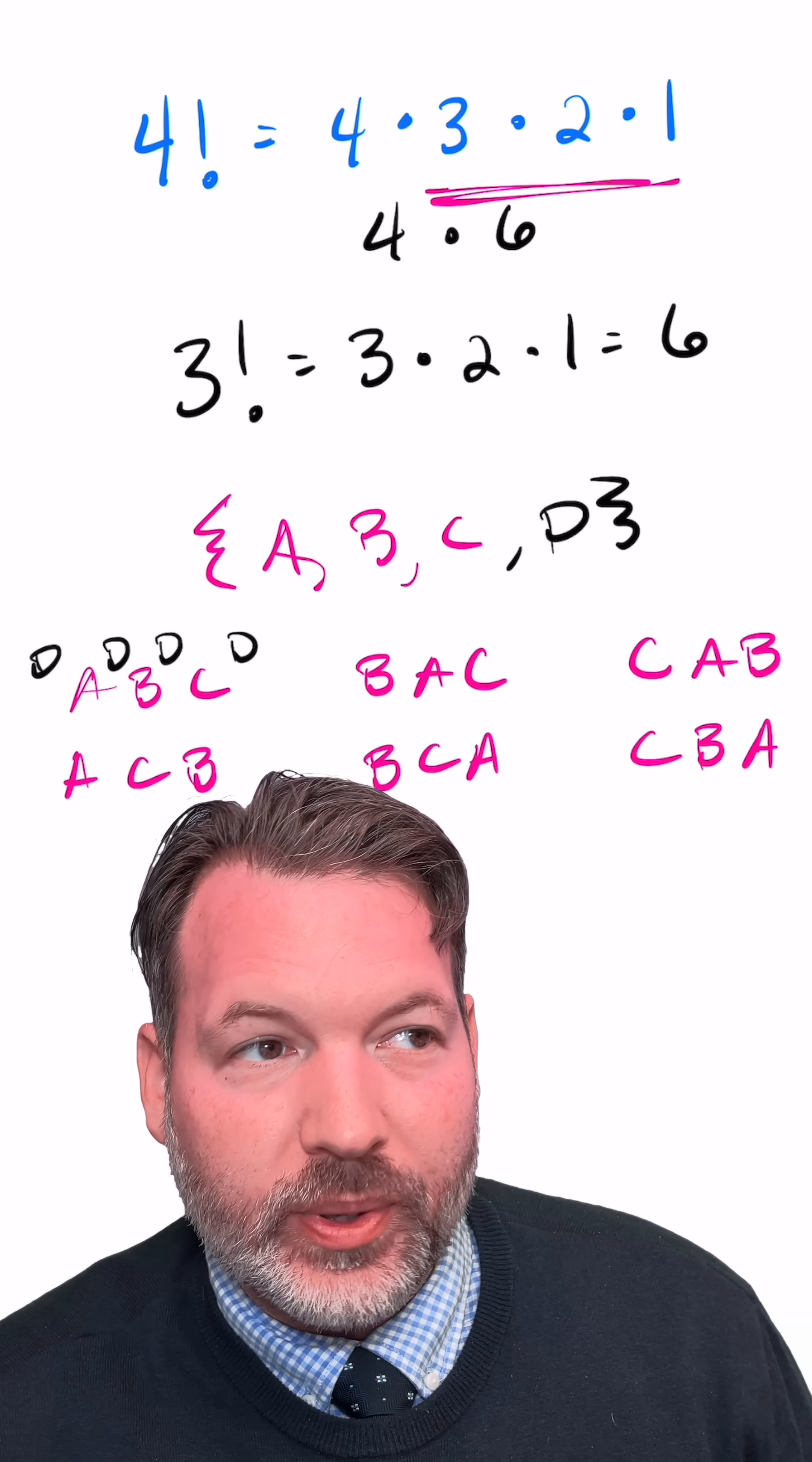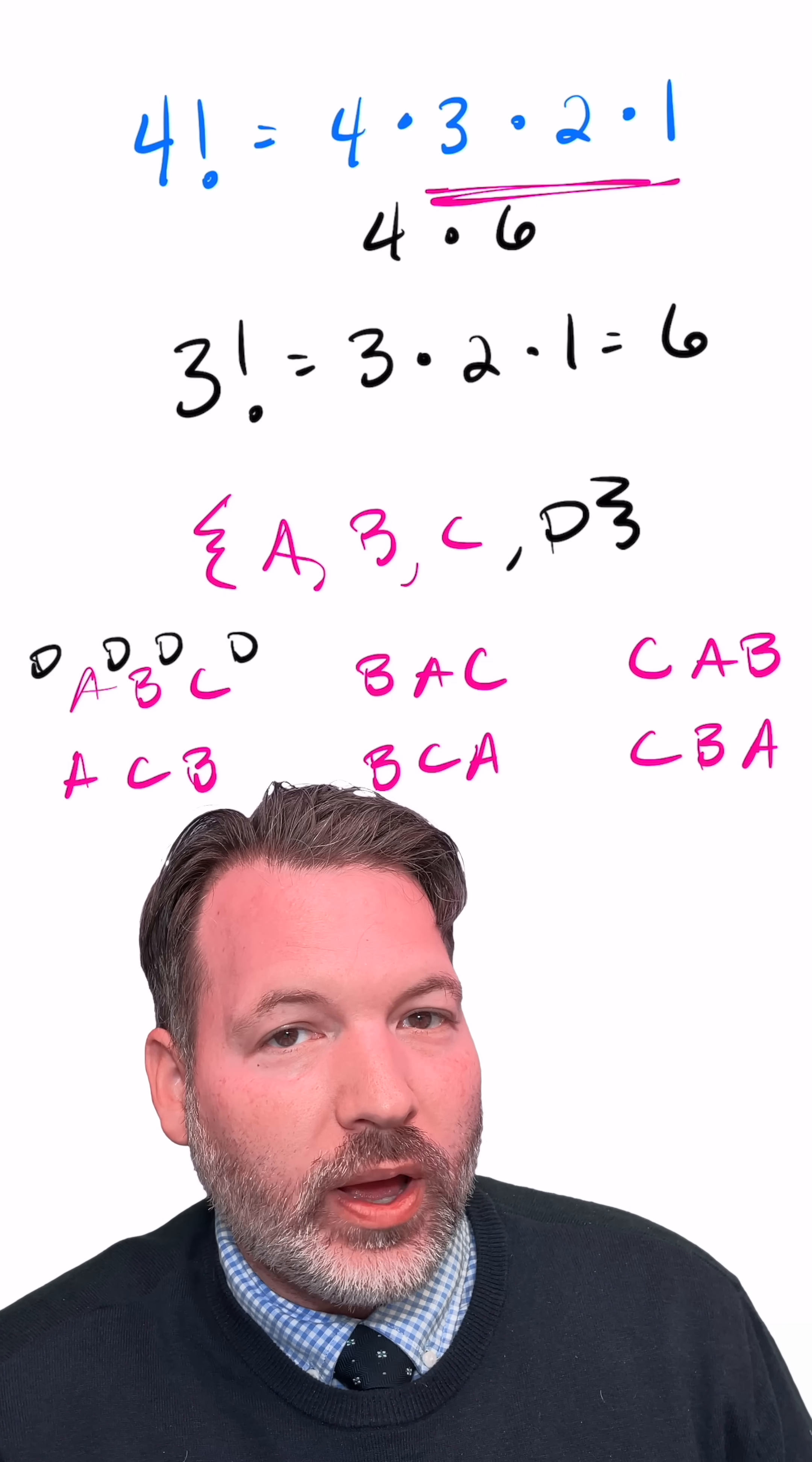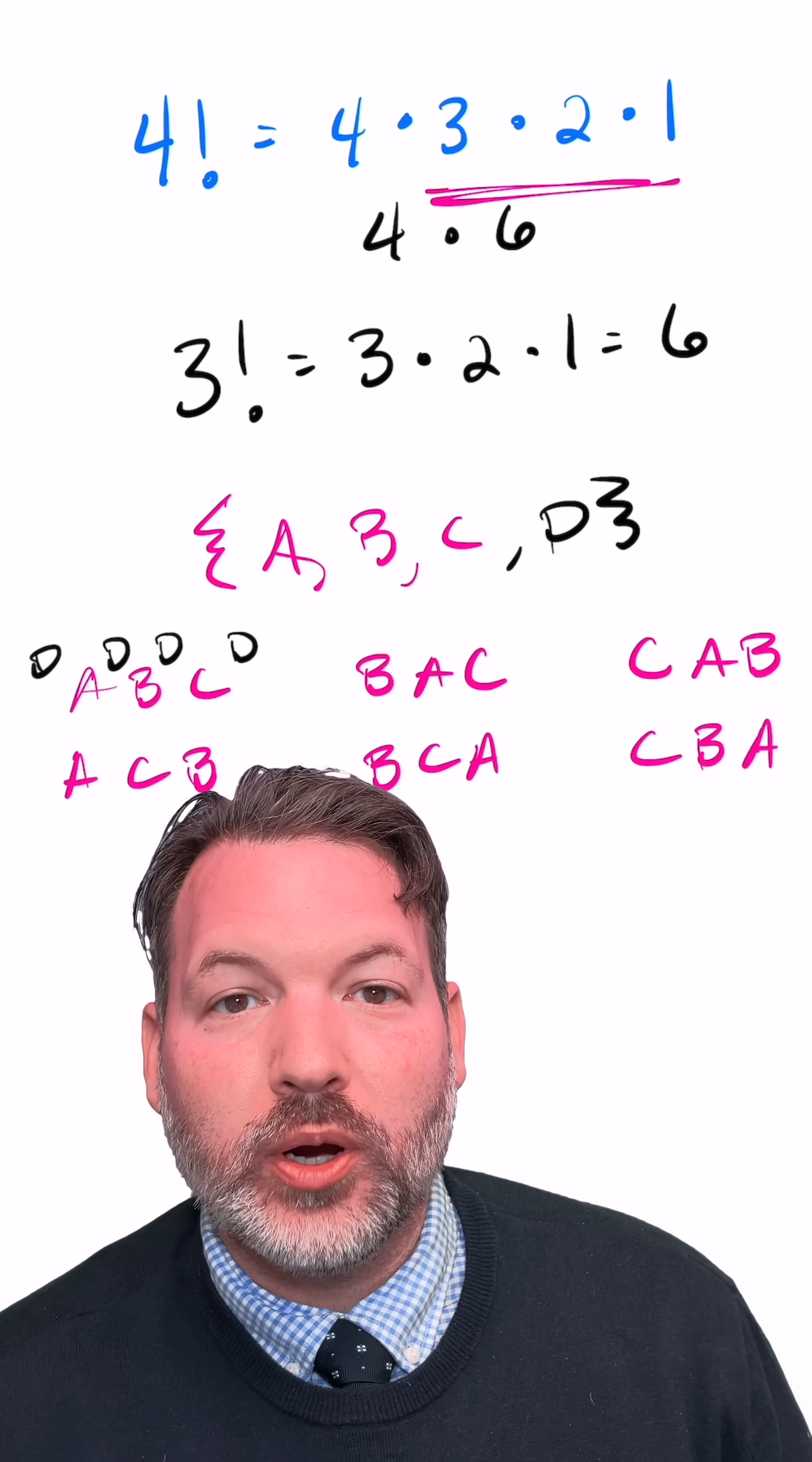But for a set with zero elements, a set we call the empty set, there is in fact exactly one way to distinctly arrange the elements of the empty set. Here it is. You're looking at the one and only way to arrange nothing.